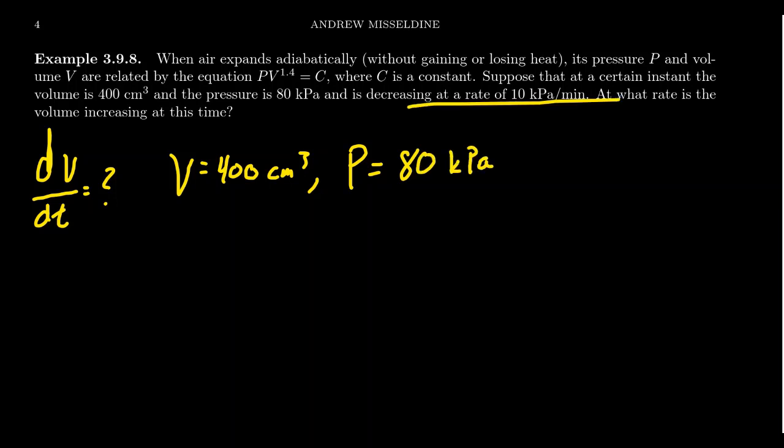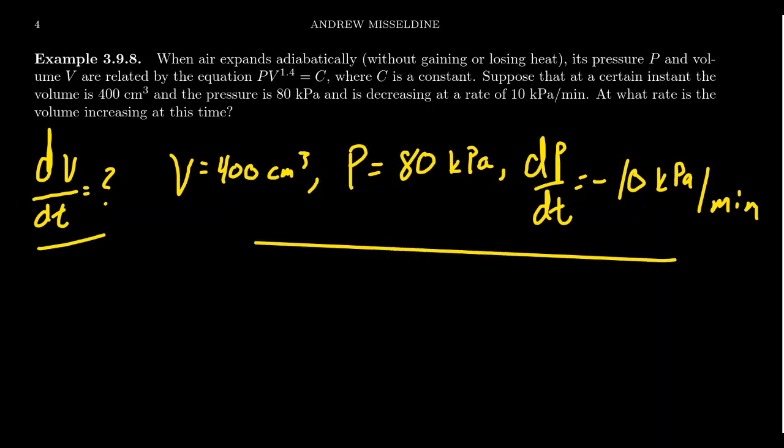And we also know that the rate in which the pressure is changing is it's decreasing 10 kilopascals per minute. So we get that dP/dt at this moment is negative 10 kilopascals per minute. You notice I have put a negative 10. The negative 10 represents that the change of pressure is decreasing with respect to time.